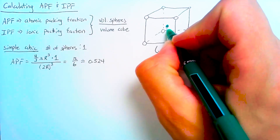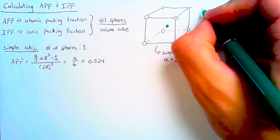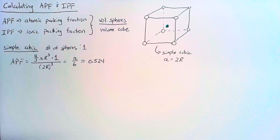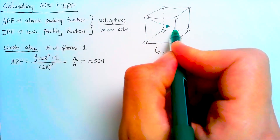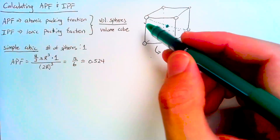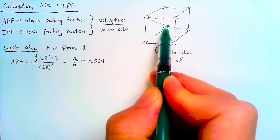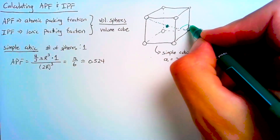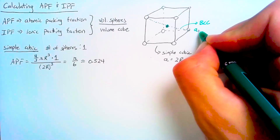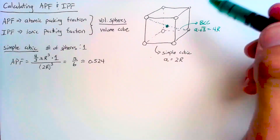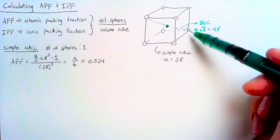The next simplest lattice type is the body-centered cubic, where a green atom sits right in the middle of the cube. The touching direction here is along the long body diagonal — from one front-top-left corner to the opposite bottom-back-right corner — giving us 1r, 2r, 3r, 4r across. For the BCC, we get that A times the square root of 3 equals 4r, since the magnitude of the body diagonal vector is A√3.